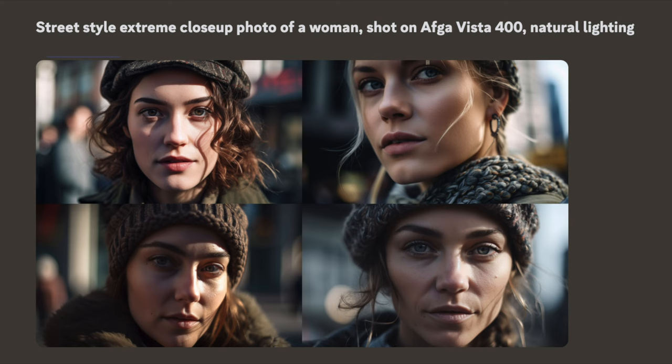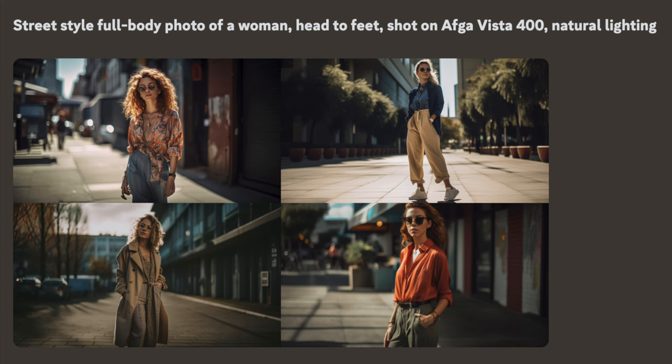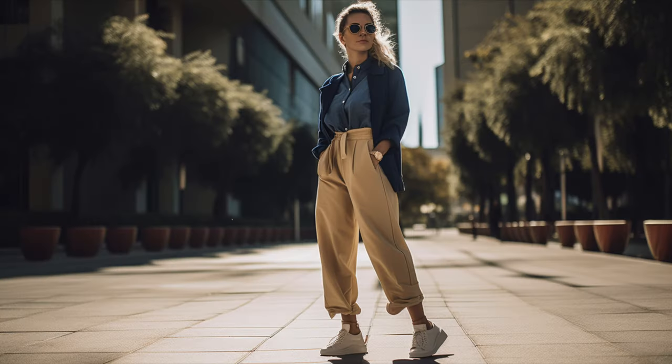If you want to get even closer, write 'extreme close up shot' — here are examples showing how close it gets. There's also the classic medium full shot, which works perfectly. And if you want to see the full body of the person, just write 'full body shot' and you get a view of the complete person. Here are examples combining several of those prompts.